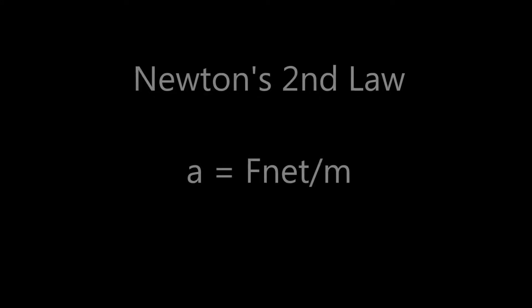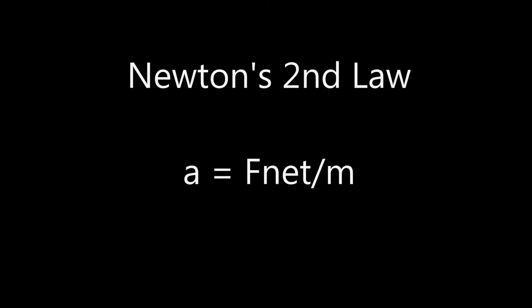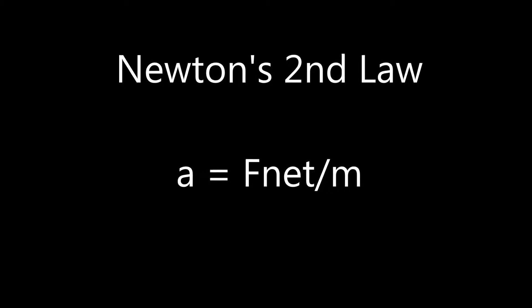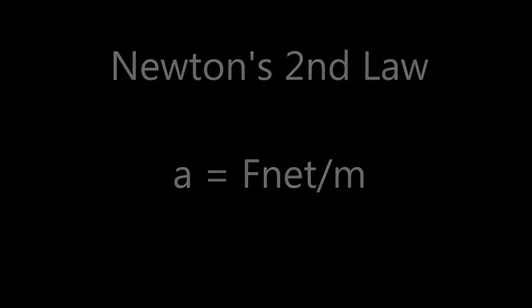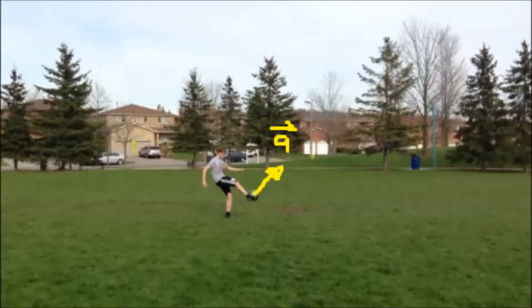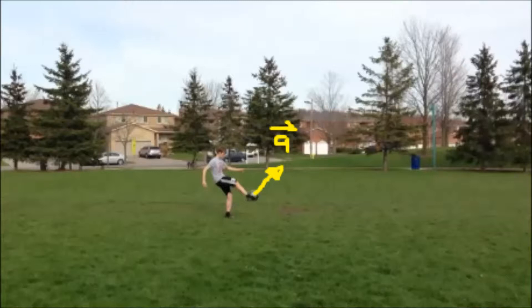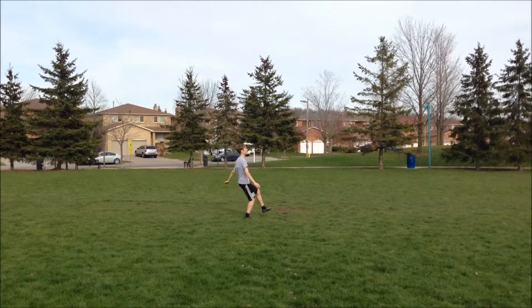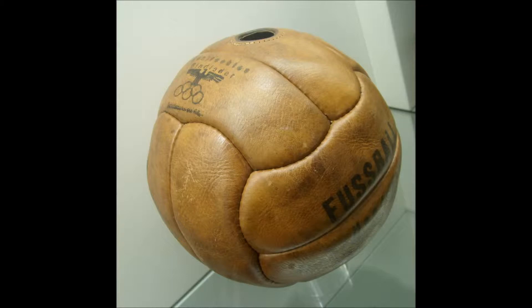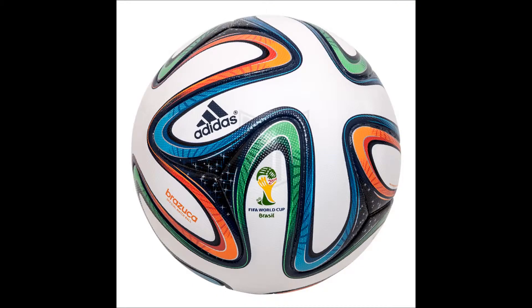This decrease in velocity will be minimal since the mass of the ball is a portion of the mass of the player's foot. Newton's second law states that the acceleration of a ball is produced by a net force that is directly proportional to the magnitude of the net force and inversely proportional to the mass of the object. Therefore, when a ball is kicked the acceleration of the ball will be in the same direction as the force. One can increase the magnitude of acceleration by increasing the force or by decreasing the mass of the ball. Over the years, technology has advanced making lighter balls, which resulted in an increase in the velocity of the ball.